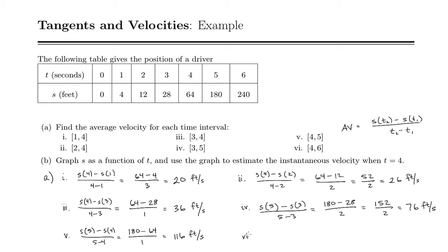And finally 6, we've got between 4 and 6. So s of 6 minus s of 4 over 6 minus 4. So that's 240 minus 64 divided by 2. I'll divide each of these by 2 first. So that's 120 minus 32. And that is 88 feet per second.